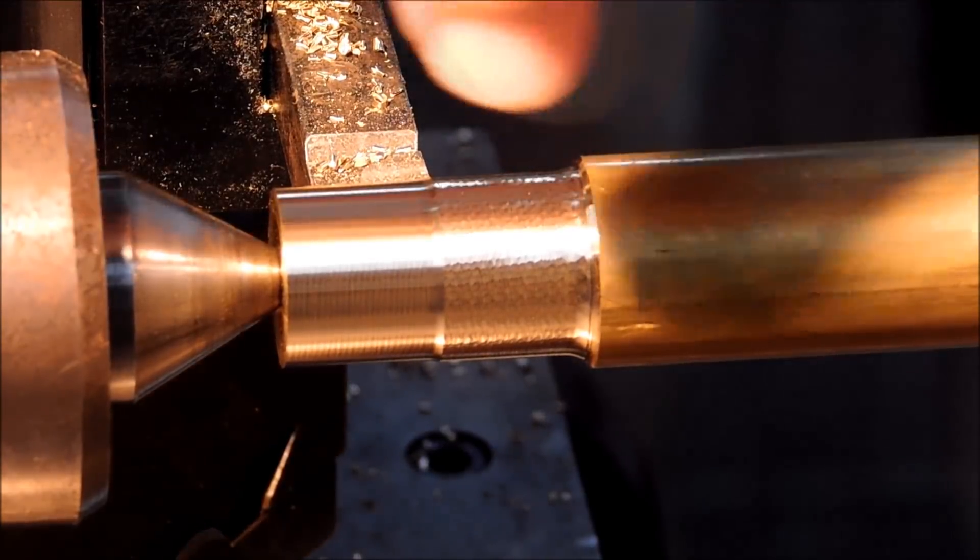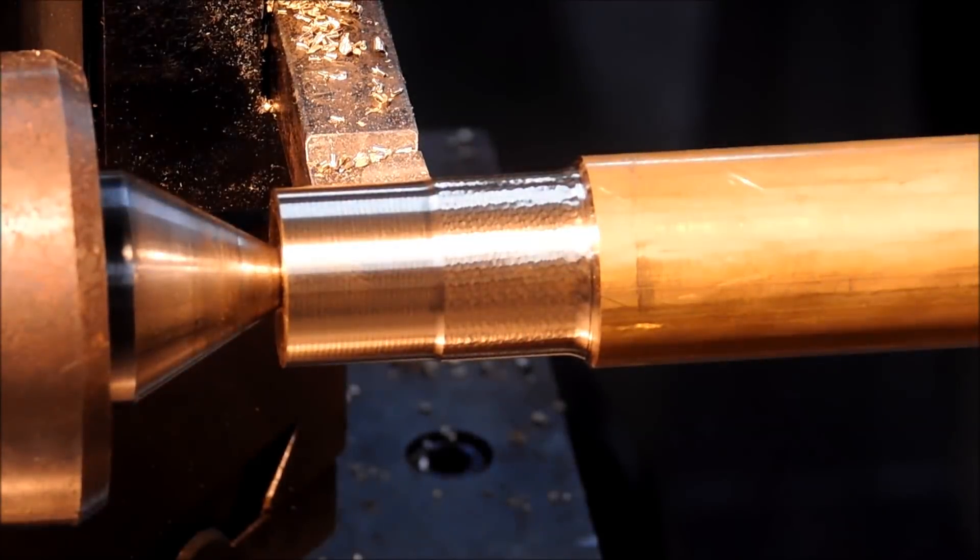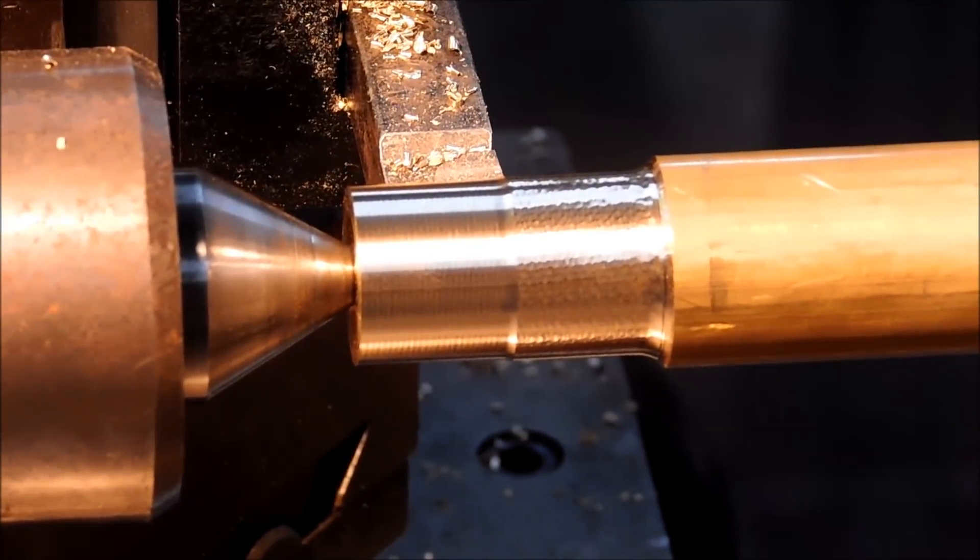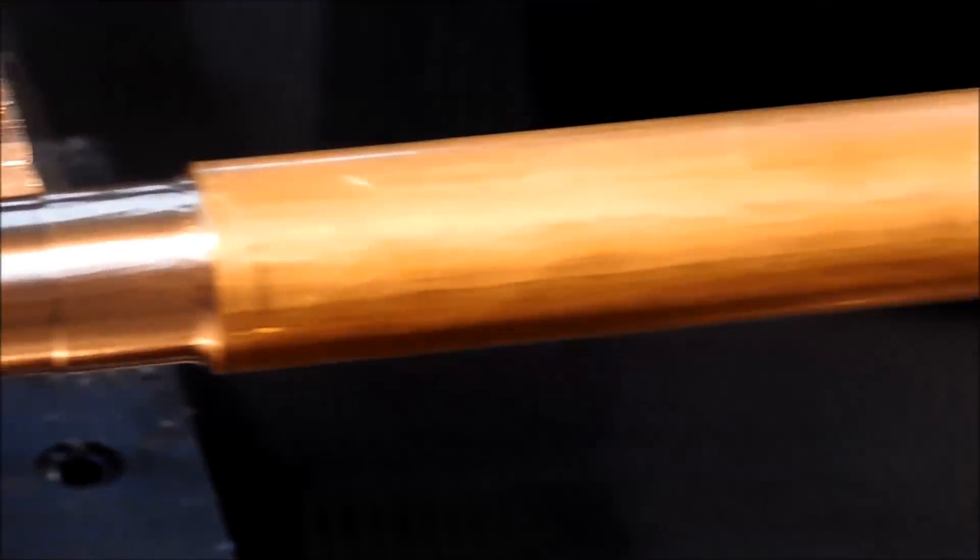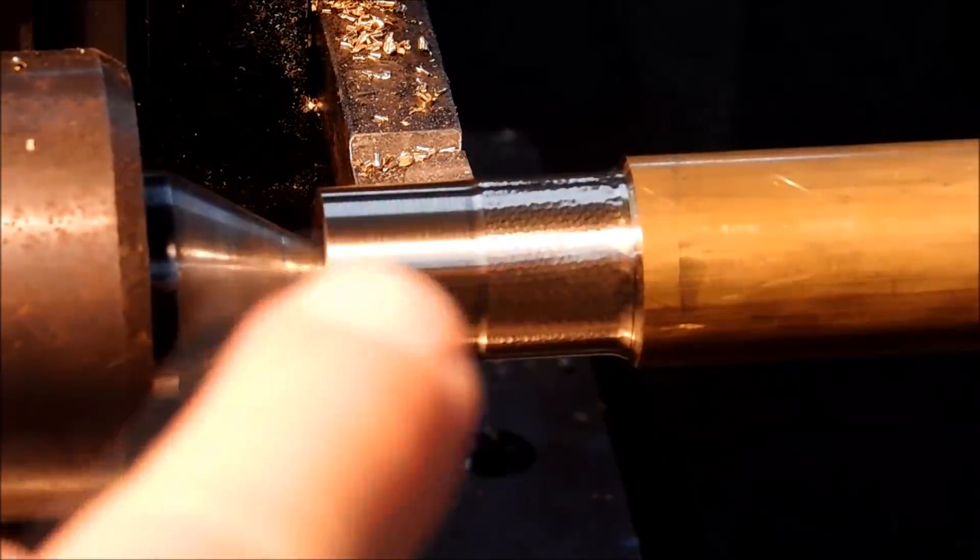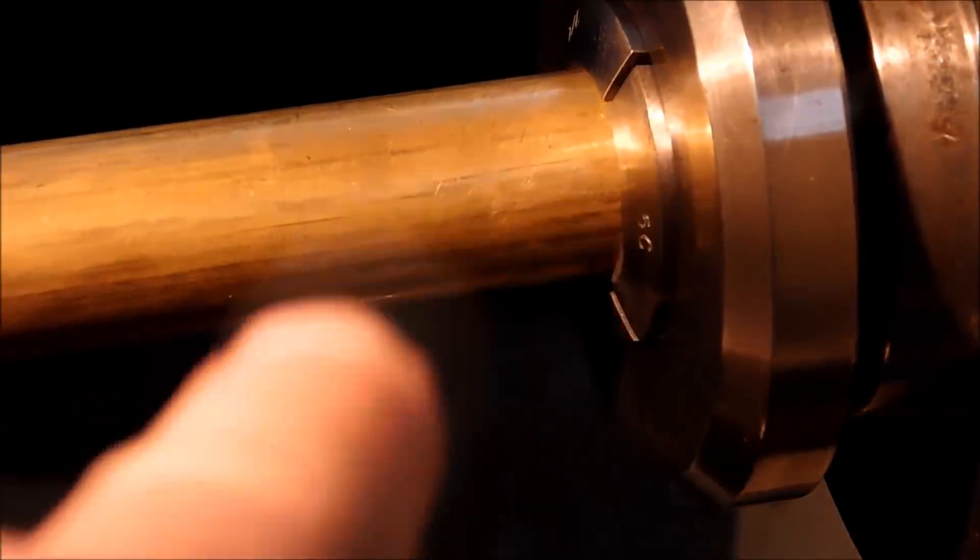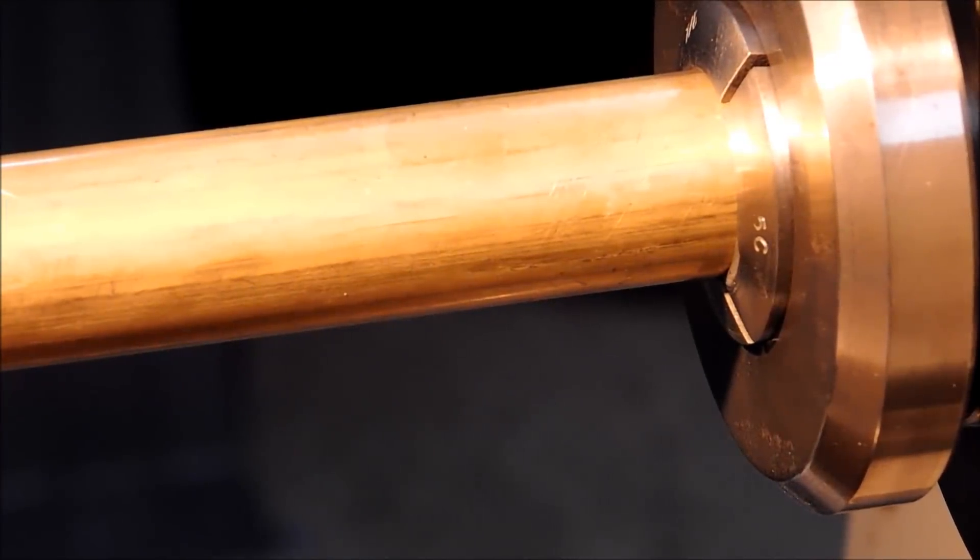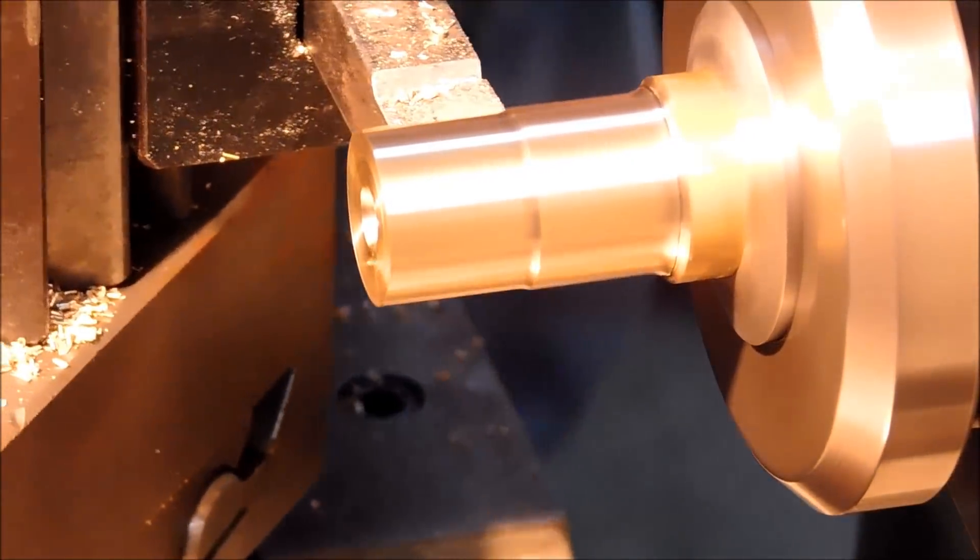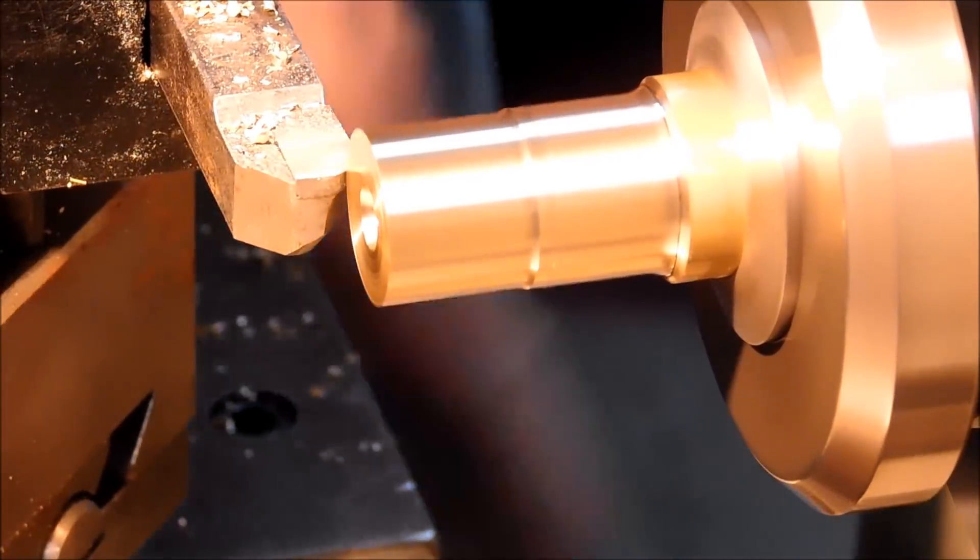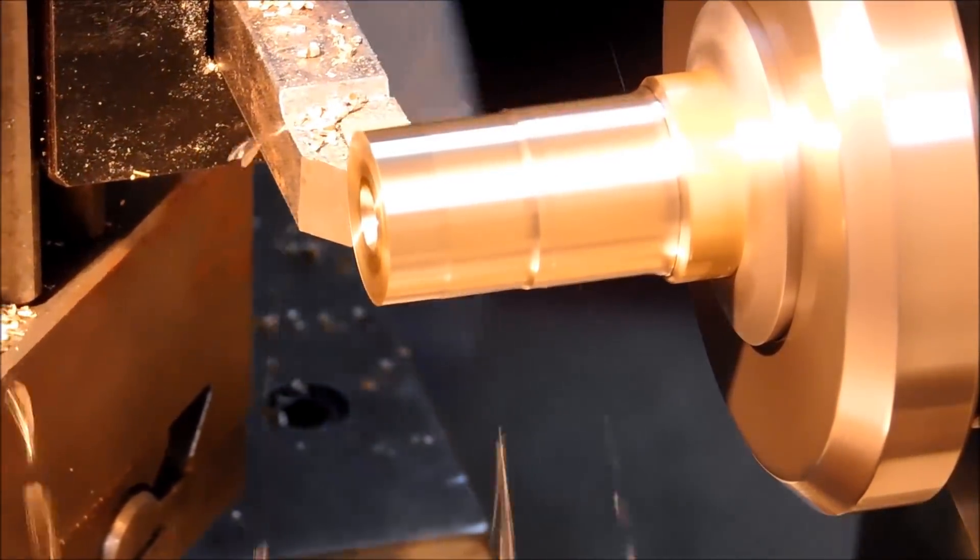Same depth of cut, same feed rate, the only difference will be the live center. There you go, night and day difference. It's supported, unsupported. There is a huge difference in the shine on that material. I am going to move this closer to the collet. I am going to use the same tool, same depth of cut, same RPM and I am going to finish removing the chatter section closer to where you have the support just to show you that that tool combination should work if the material behaves itself.